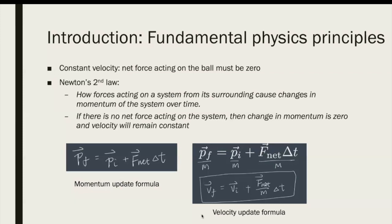About the momentum update formula, it states that the final momentum is equal to initial momentum plus the net force multiplied with the delta t. So if the net force is zero, then the second term on the right hand side will be zero. So the final momentum equals the initial momentum.